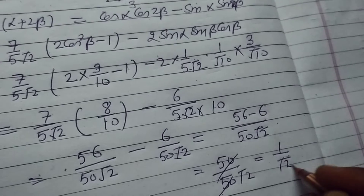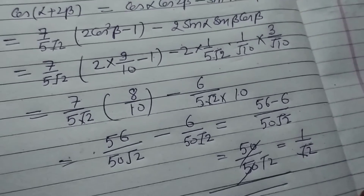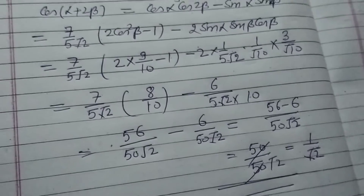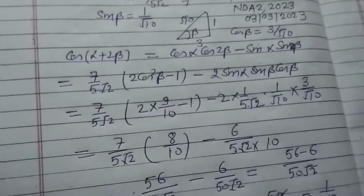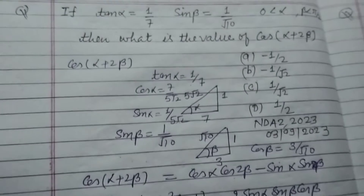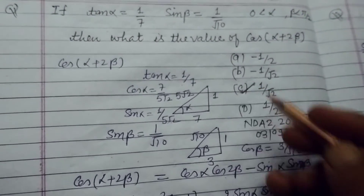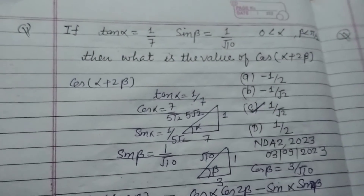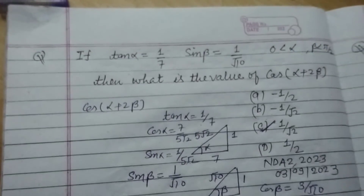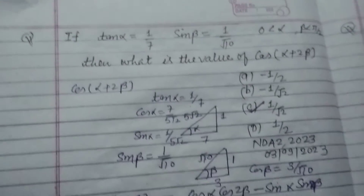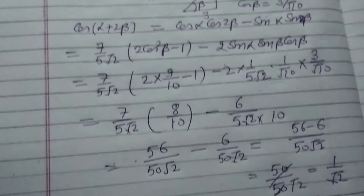So 1 upon √2 is the value of this question, which is found in option C. Therefore option C of this question is correct. I hope you got it — please like the video, subscribe the channel, thanks for watching.